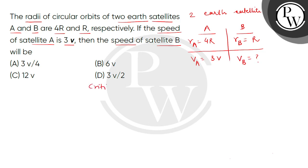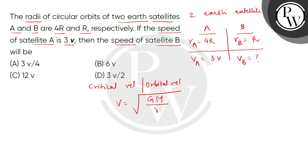Let's talk about the expression for critical velocity, or orbital velocity, which we express as the square root of gravitational constant G times the mass of Earth M divided by orbital radius R. Here, since G and M are both constants for Earth, orbital velocity is inversely proportional to the square root of R.